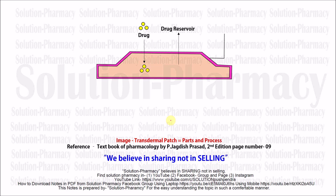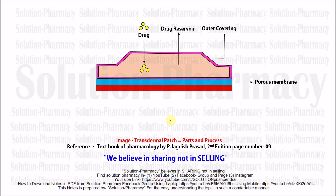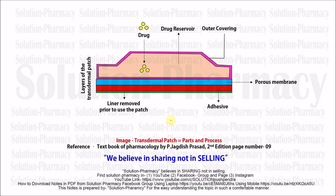To maintain the drug in the reservoir, a sealing effect is needed from the back side, so the back layer of the drug reservoir is called the outer covering — it protects against drug release from the back and prevents backflow. The porous membrane is fixed with an adhesive that allows the drug patch to stick over the skin so it will not be removed during movement. The sticky layer has to be removed prior to the application of transdermal patches — it is just like a sticker film.